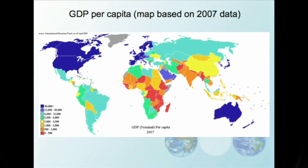This first map shows GDP per capita based on 2007 data. The darkest blue colors represent GDP of $30,000 or more. As you move into cooler colors, those numbers decrease, and into warmer colors again, you see very low GDP per capita. In the yellow, people are living on $2,000 to $3,500 a year; in the red, it's $0 to $500 a year. There are huge amounts of difference across different countries in terms of GDP.